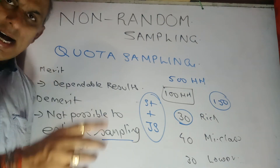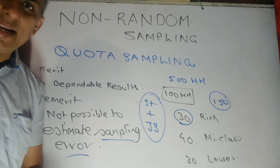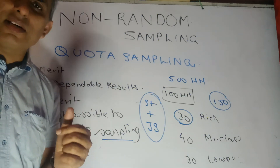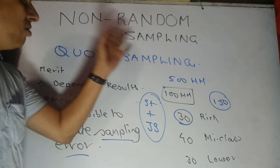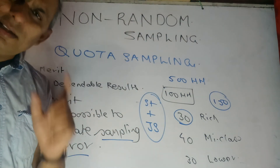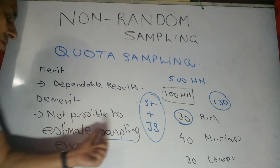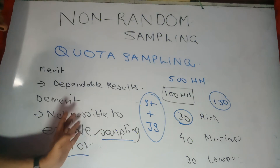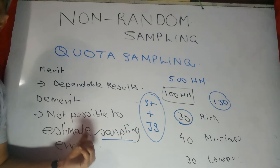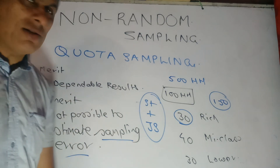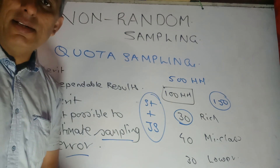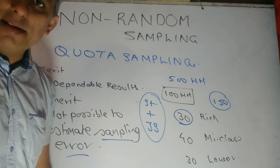So another negative point, apart from bias which is common to all non-random sampling methods, is that it is difficult to eliminate all sampling errors in quota sampling. I hope all of you understood quota sampling — another method of non-random sampling. Thank you.